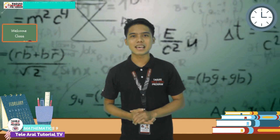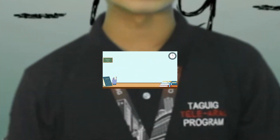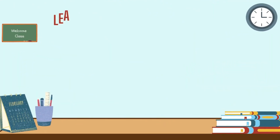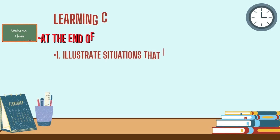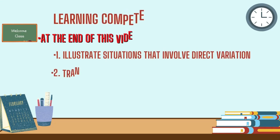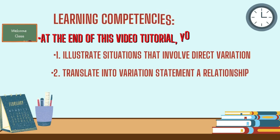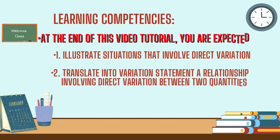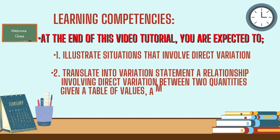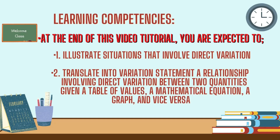Come on and let's get this started. At the end of this video tutorial, you are expected to: first, identify situations that involve direct variation; second, translate a statement or equation involving direct variation between two quantities given a table of values, a mathematical equation, a graph, and other representations.